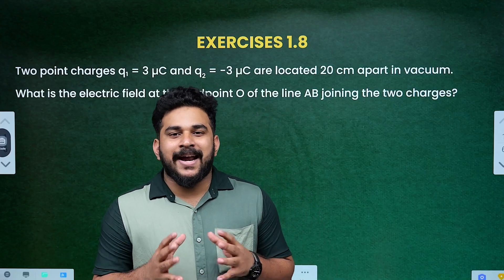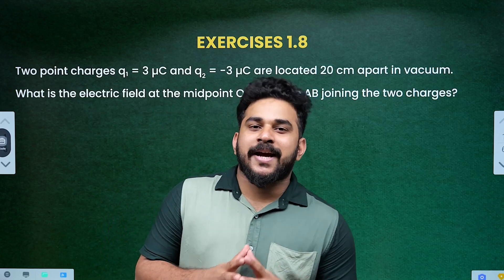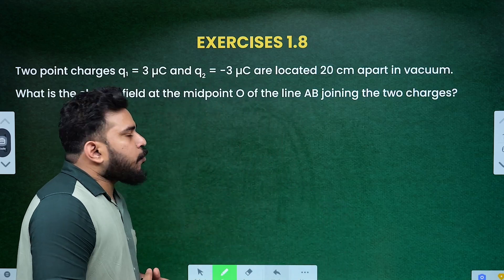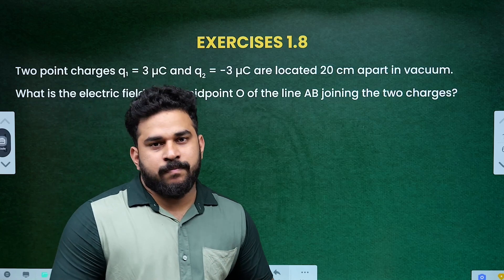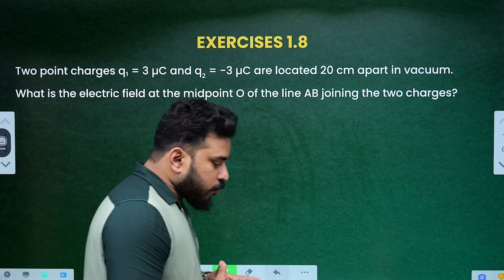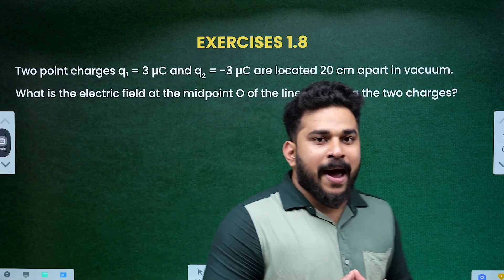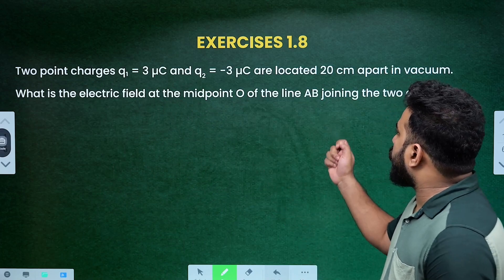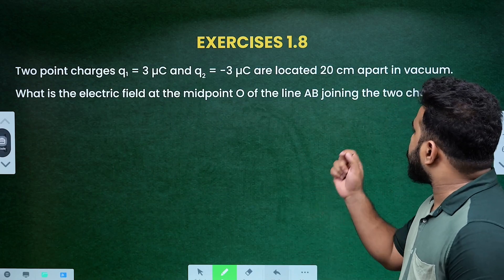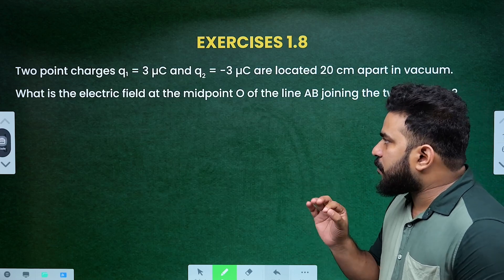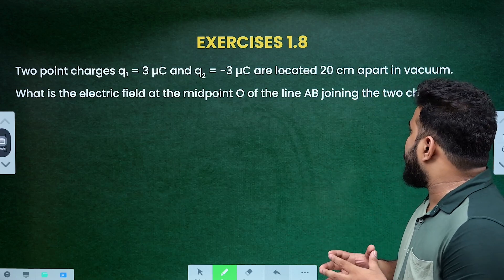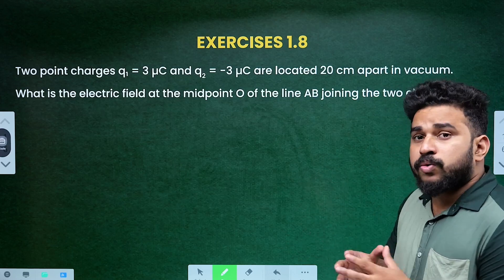Hello everyone. NCRD Electrostatics, exercise 1.8. Two point charges Q1 is equal to 3 microcoulomb and Q2 is equal to minus 3 microcoulomb are located 20 centimeter apart in vacuum. What is the electric field at the midpoint O of the line AB joining the two charges?